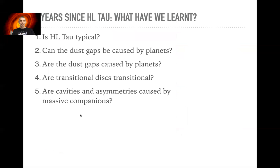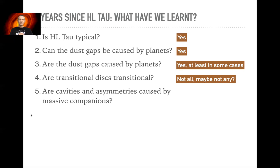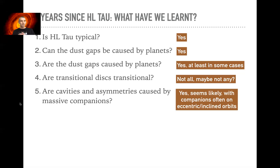To summarize: it's been five years since HLTau and we've been able to answer some of these questions. Is HLTau typical? Yes. Can the dust gaps be caused by planets? Yes. Are the dust gaps caused by planets? Yes, at least in some cases — it remains to be seen for all. Are transitional disks transitional? Definitely some of them aren't — they're carved by dynamical interactions and we've done detailed modelling for several large-cavity disks. Are cavities and asymmetries caused by massive companions? This seems quite likely; the modelling works when you find companions on eccentric and sometimes inclined orbits. Thank you, and great to be here in Chile.